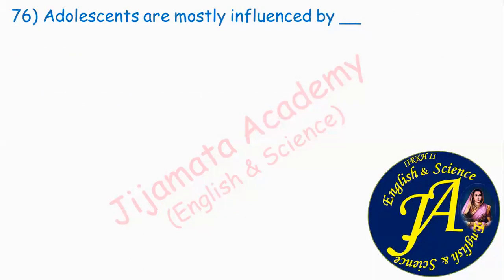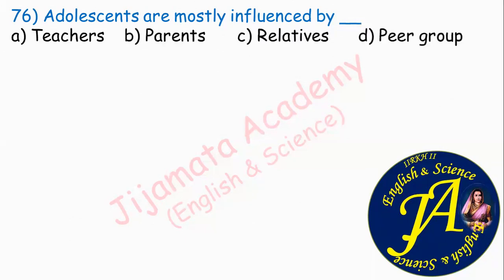Adolescents are most influenced by dash. Options are teachers, parents, relatives, or peer group. Answer is option D: peer group is the correct answer. Friends and peers have the most influence on adolescents.